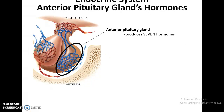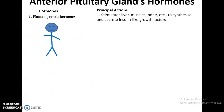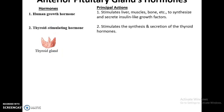The anterior pituitary gland can produce several hormones. This includes human growth hormone, which stimulates overall synthesis and secretion of growth factors. It stimulates the liver, muscles, and bones to divide, grow, and function — basically, this is what helps us grow to whatever height we end up being.